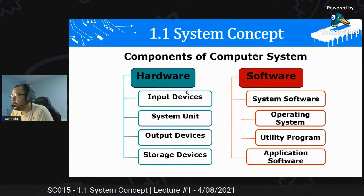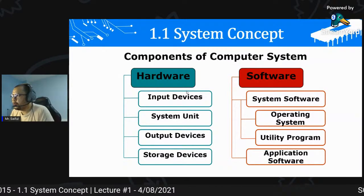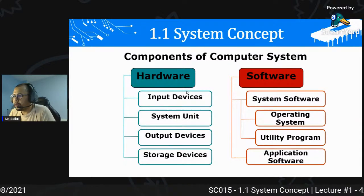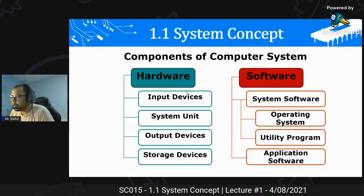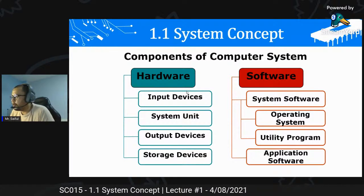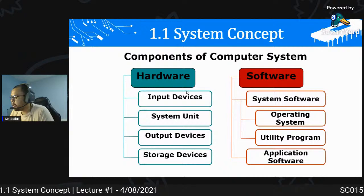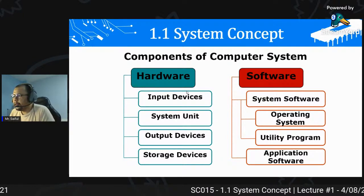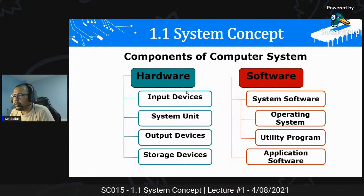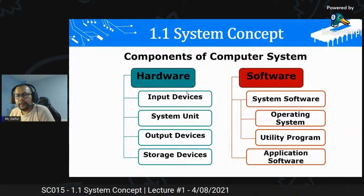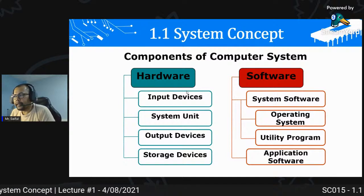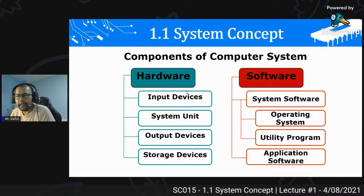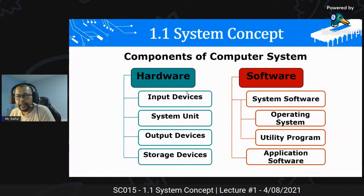Component of computer system - kita ada dua komponen utama: hardware and software. Hardware dia ada input device, system unit, output device, dan storage devices. Hardware ni kita kata perkakasan, iaitu physical device yang kita boleh pegang dan nampak.